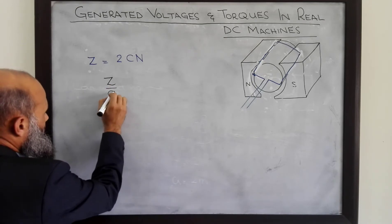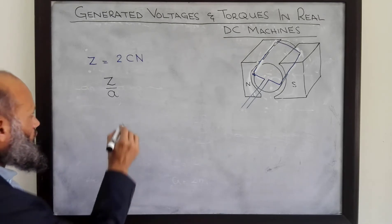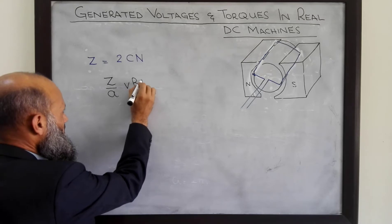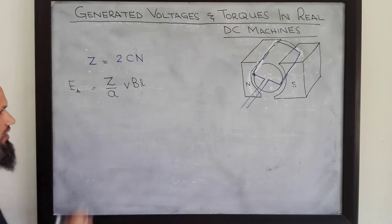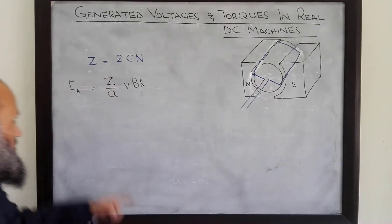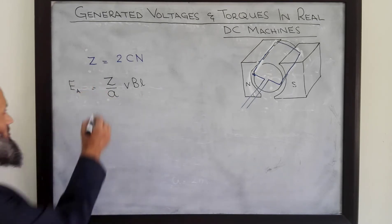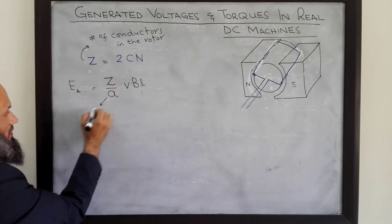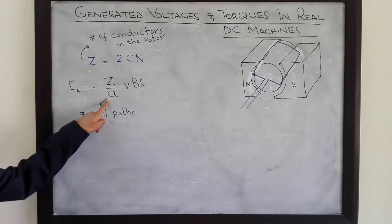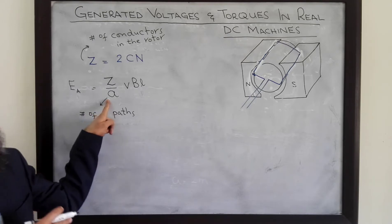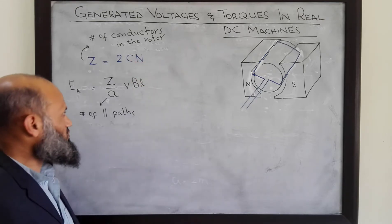There are Z/A conductors in each parallel path, and in each conductor a voltage VBL is being induced. So the total voltage generated in the rotor of a DC machine equals Z/A multiplied by VBL, where Z is the total number of conductors and A is the number of parallel paths. The number of parallel paths depends upon the type of winding — whether lap-wound or wave-wound — and also upon the number of poles.